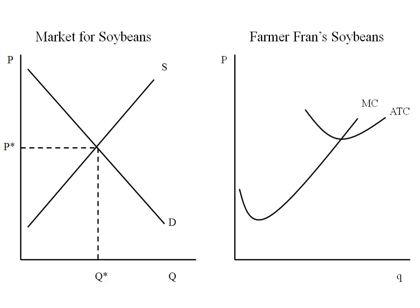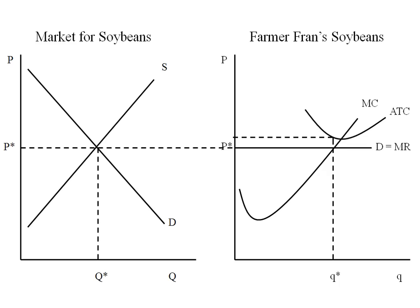On the left we've got our market for soybeans and on the right we've got the cost structure for one particular farmer in this industry. Now we take the market price and take it straight over, and that becomes the individual farmer's demand and marginal revenue curve. Now that we have marginal revenue and marginal cost we can find the profit maximizing level of output, or Q star. At Q star we go up until we hit the ATC and over, and in this case since the ATC is higher than P star, this particular firm is earning a loss.